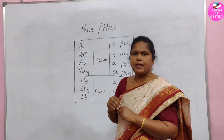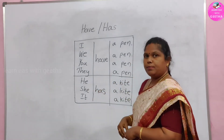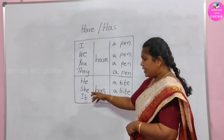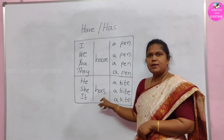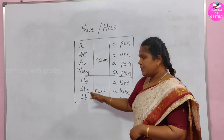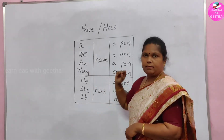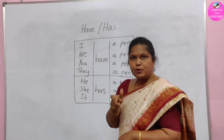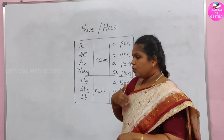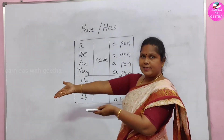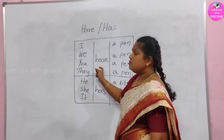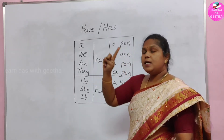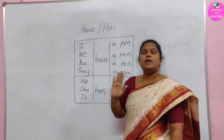Simply keep this in mind: for he, she, it — we say he has, she has, it has. For I, we, you, they — we use have. If you are talking about yourself, or we people, or someone else — one or many persons — then we use have. Only a singular boy, singular girl, or a single animal or bird — we use has.